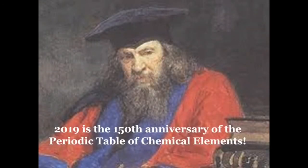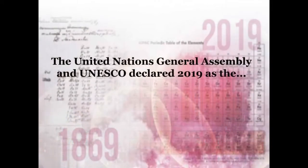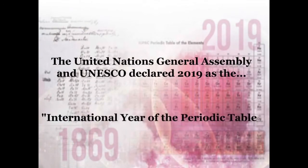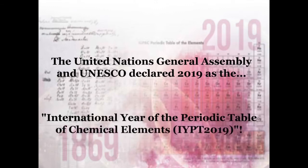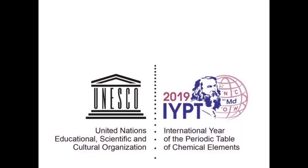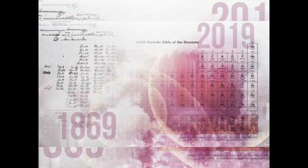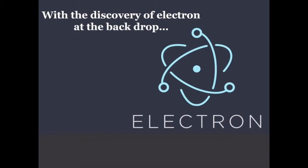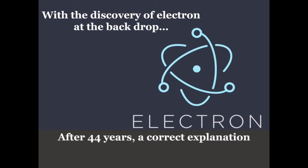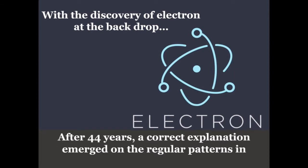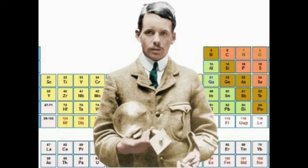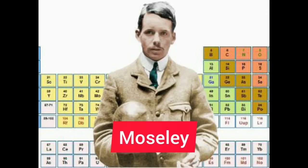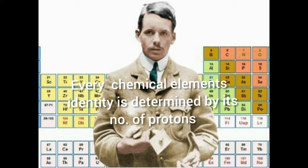1869 is accepted as the year of discovery of the periodic system by Dmitri Mendeleev, the father of the periodic table. 2019 marked the 150th anniversary of the periodic table and was declared the International Year of the Periodic Table of Chemical Elements (IYPT 2019). Element 101 in today's periodic table is named Mendelevium in his honor. In 1913, Henry Moseley, an English physicist, discovered that every chemical element's identity is determined by its number of protons — its atomic number.